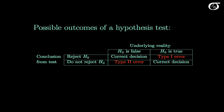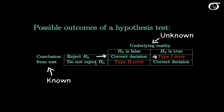Here in table form are the possible outcomes of a hypothesis test. In the columns is the underlying reality, and that's going to be unknown to us. In the rows is the conclusion from the test, which is going to be known once we carry out our test. If we end up rejecting the null hypothesis and the null hypothesis is false, we made the correct decision. But if we rejected the null hypothesis and the null hypothesis is true, we made a type 1 error. If we do not reject the null hypothesis and in reality the null hypothesis is false, we made a type 2 error. But if we don't reject the null hypothesis and in reality it's true, we made the correct decision.